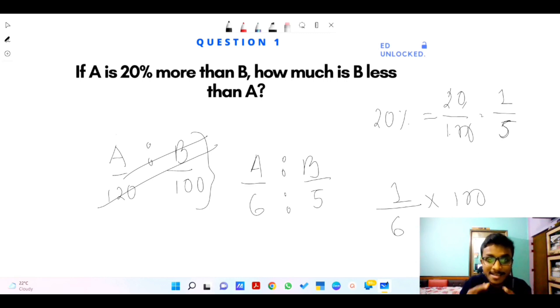B is less than A, so our base is A, which is 6. The difference is one. So one divided by 6 into 100 gives 16.67. Done, simple. I hope you guys understood.